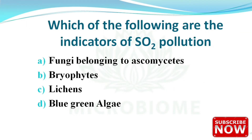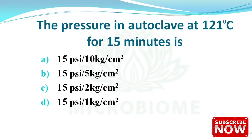Next: which of the following are indicators of SO2 pollution? The options are fungi belonging to Ascomycetes, bryophytes, lichens, and blue-green algae. The right answer is option C — lichens. Lichens are an association between fungal species and algae. The three main types of lichens are foliose, fruticose, and crustose.